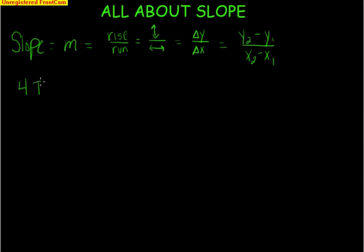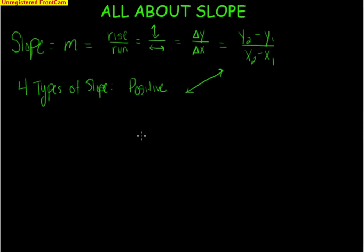We have four types of slope. We have positive slope — best described as going up a hill as you go from left to right, a diagonal line going upward. We have negative slope, which is going down or dropping — also called a falling line. We know it's positive if we get a positive answer from the formula, like 1/2. If we get a negative answer like negative 2/3, that's a negative slope.